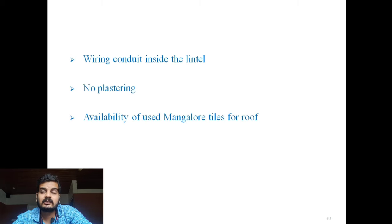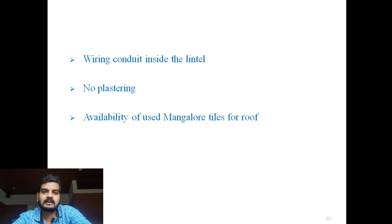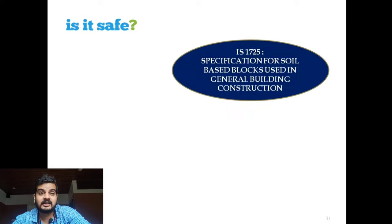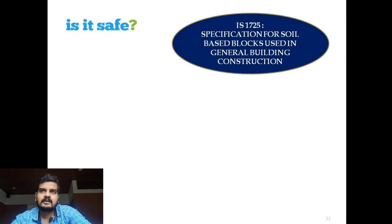For wiring, conduits inside the pipe may be more expensive, but you can use the offset method as described earlier with the lintels to pass conduit pipes through. Also, no plastering is required for interlocking brick stabilized walls. Additionally, I have used second-hand Mangalore tiles — available for a maximum of five rupees each.